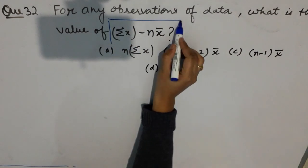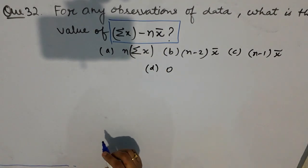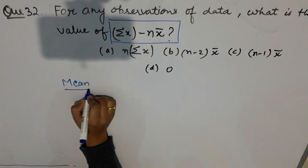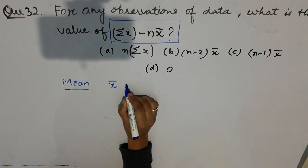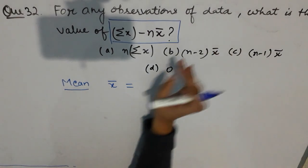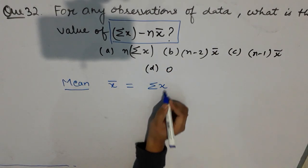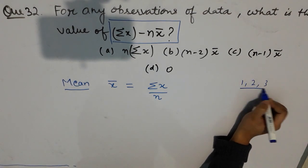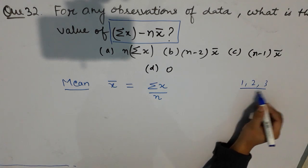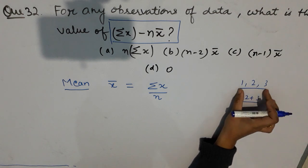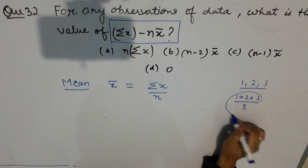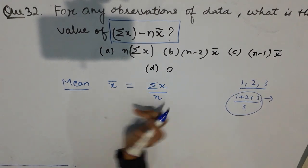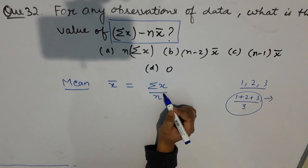This is a question of statistics. If you know the formula of mean — x̄ equals summation of x divided by n — it means if you have any three data values and you want the mean, you add all the data: 1 plus 2 plus 3, divide by 3 numbers, and that will be the mean. Similarly, x̄ = Σx / n.